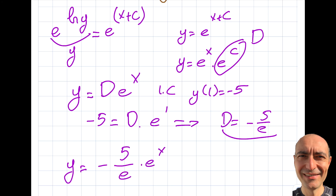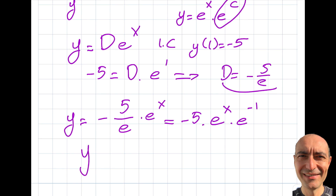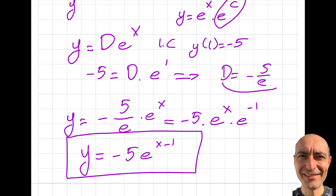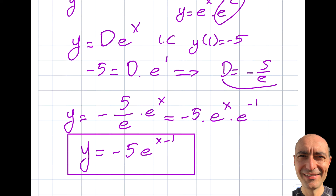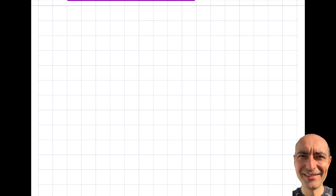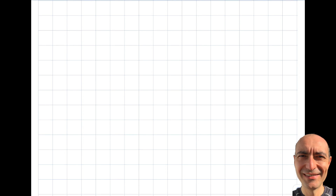I can simplify one more step: (−5/e) · e^x = −5 · e^x · e^(−1) = −5 · e^(x−1). So the final particular solution is y = −5 · e^(x−1). Now let me give you one more example coming from the engineering side of things.